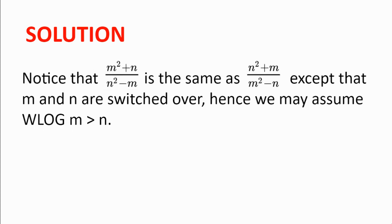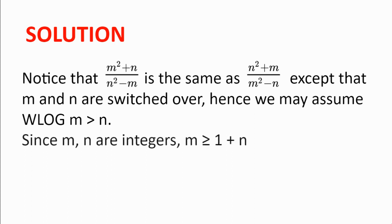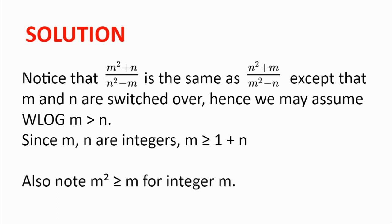We'll now move on to the main case. We notice that the two fractions are symmetric with m and n swapped, so we may assume without loss of generality that m > n, and flip solutions if n > m. Since we've handled m = n, we now have m > n, which for integers means m ≥ n + 1. We also note that m² ≥ m for integer m.